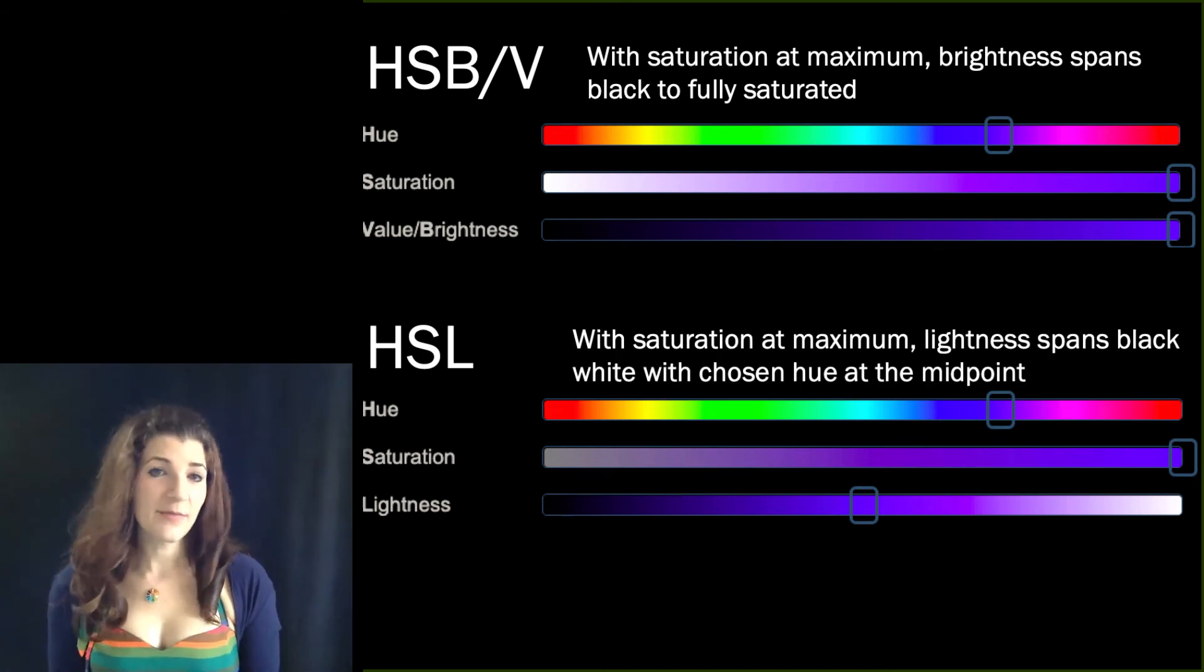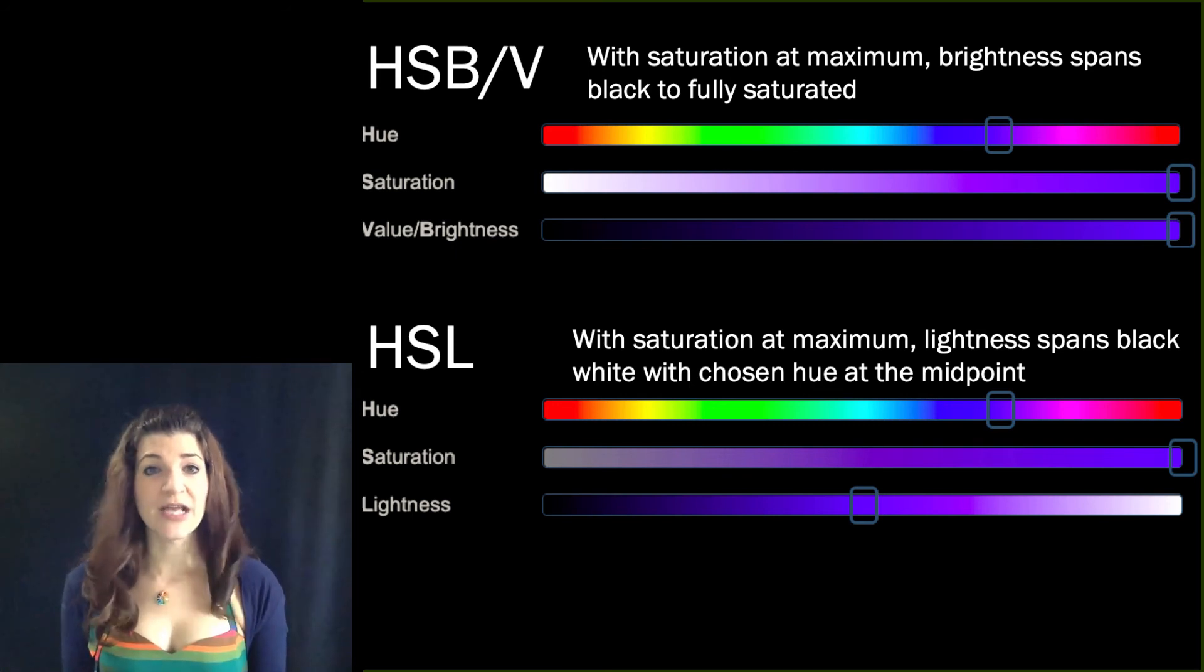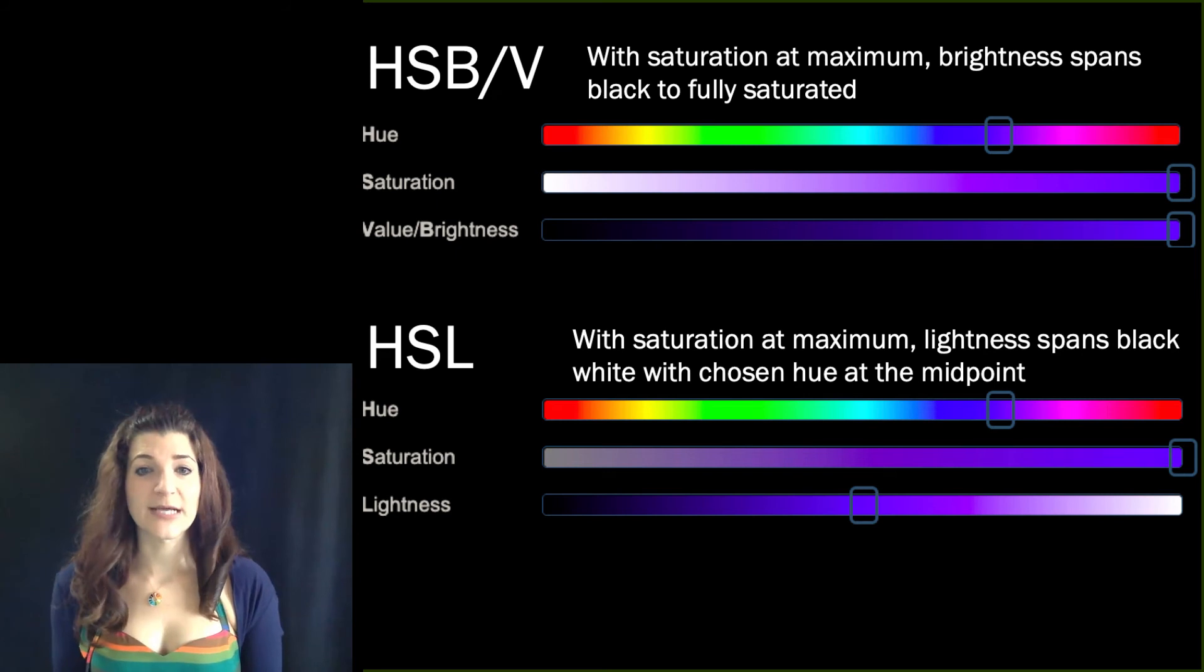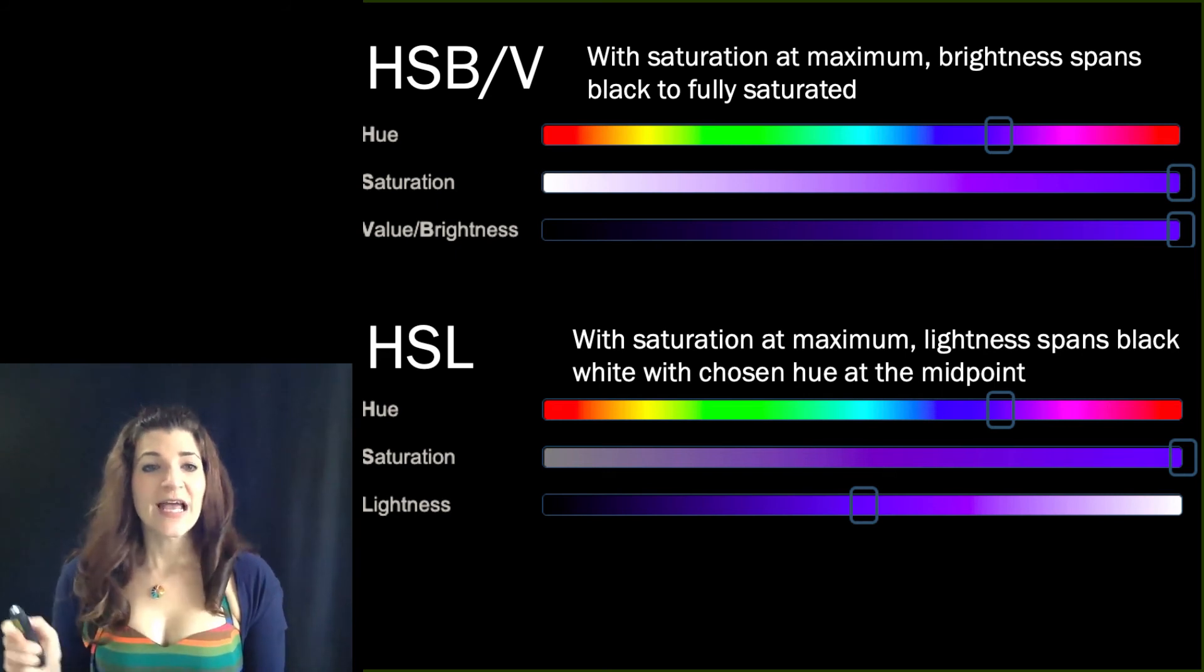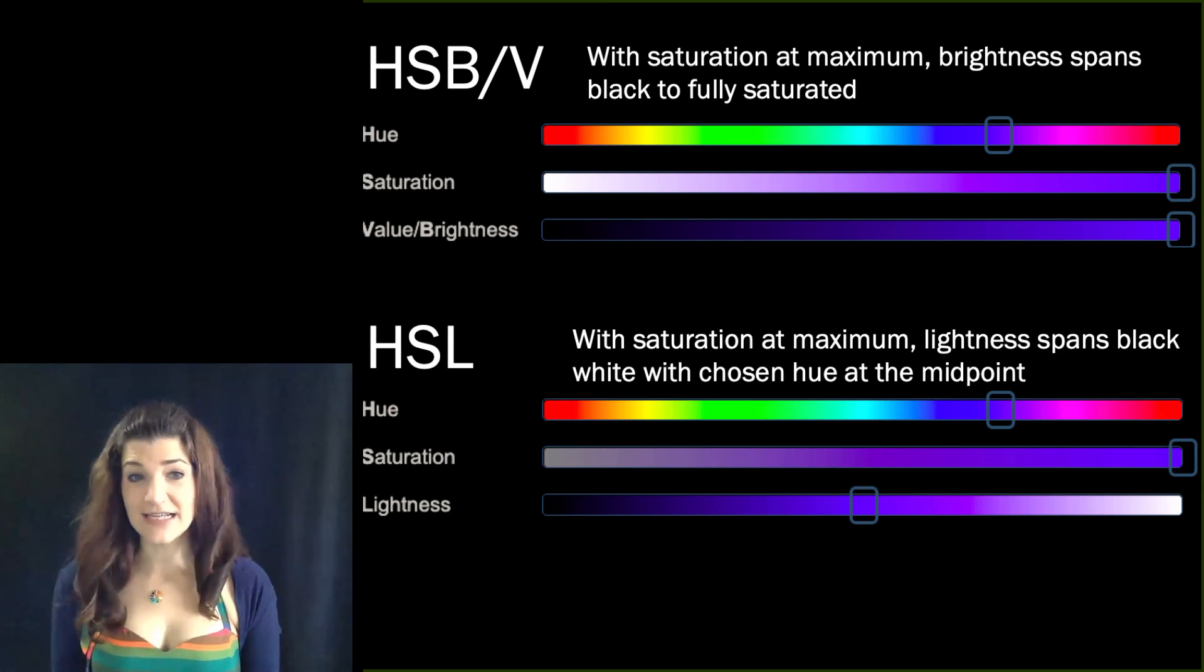So these ways of thinking about color can both represent the same range of colors. All that differs is the terminology and kind of what the neutral points represent. So HSB and HSL are ways of representing color space by making hue continuous corresponding to wavelength primarily, and then adjusting the purity and the amount of light.